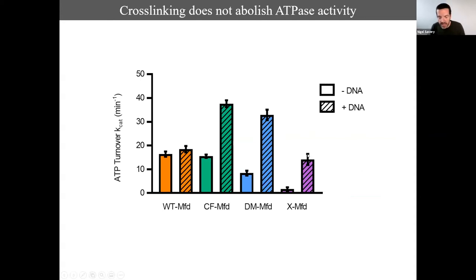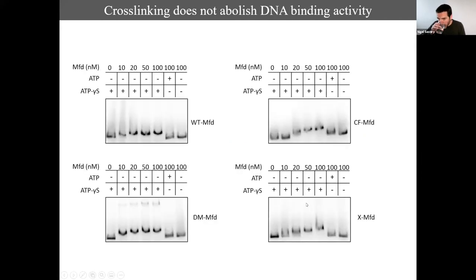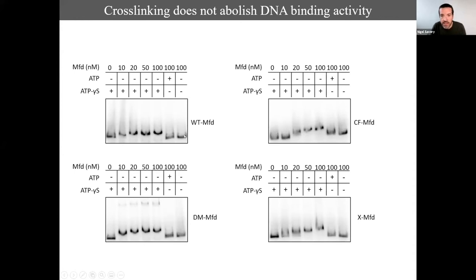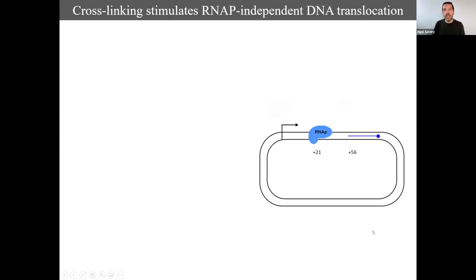The cross-linking works — we have a cysteine-free version, the double mutant with cysteines at each end, and the cross-linked version, visible by a shift on a protein gel with over 90% cross-linking efficiency. If you've got this cross-linked protein, what can it and can't it do? Cross-linking those two domains doesn't abolish ATPase activity, although it does reduce it — you can still get DNA-dependent ATPase with those two domains cross-linked.